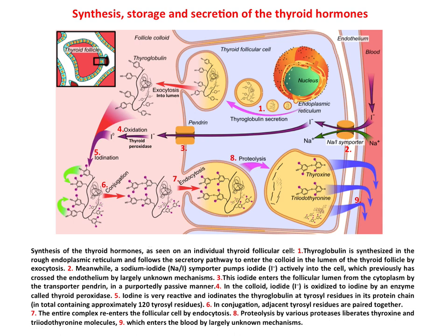Now the synthesis, storage, and secretion of thyroid hormones. Here you can see the structure of a follicular cell — the inner part is called the lumen, shown as the pink part, and this is the bloodstream. The synthesis, storage, and secretion of thyroid hormones can be done in nine steps. I am going to explain them one by one.